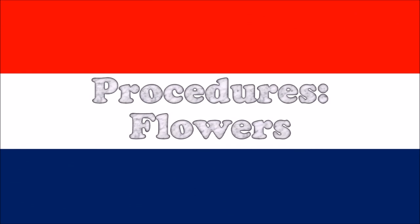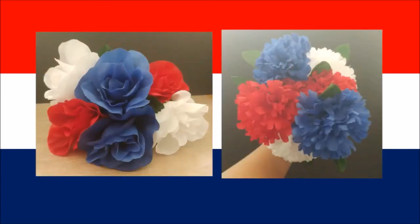Now that the tin vase is completed, all we have to do is add the flowers. These are the flowers I selected to be on the inside. On the left you have roses and the right are carnations, each with their own red, white, and blue colors.